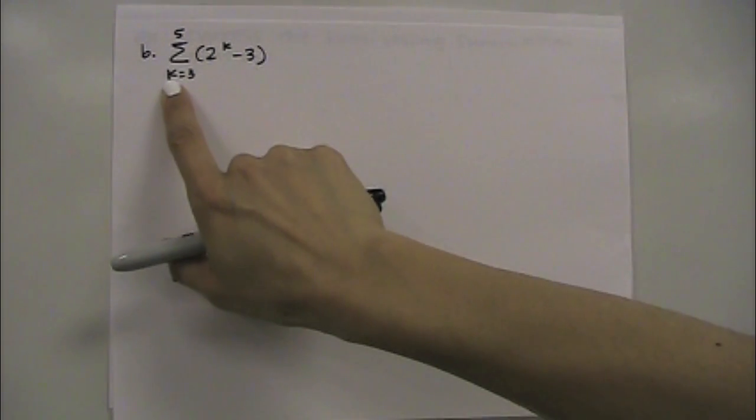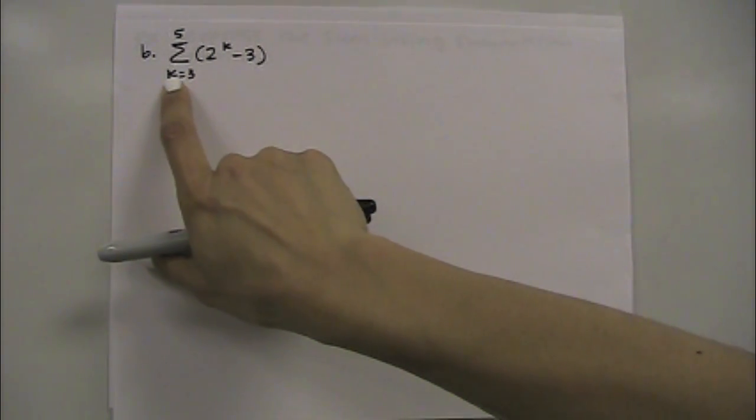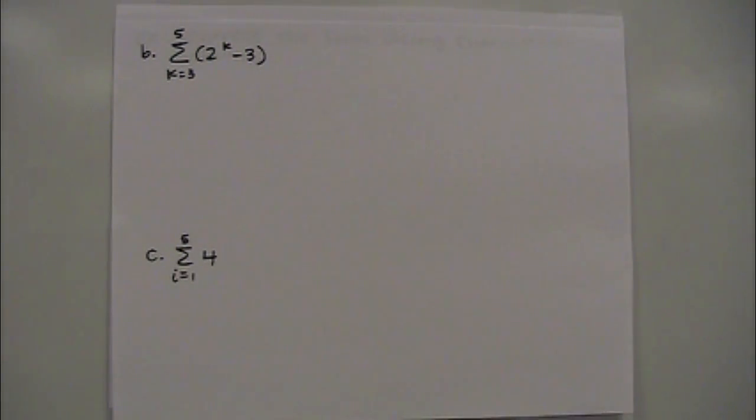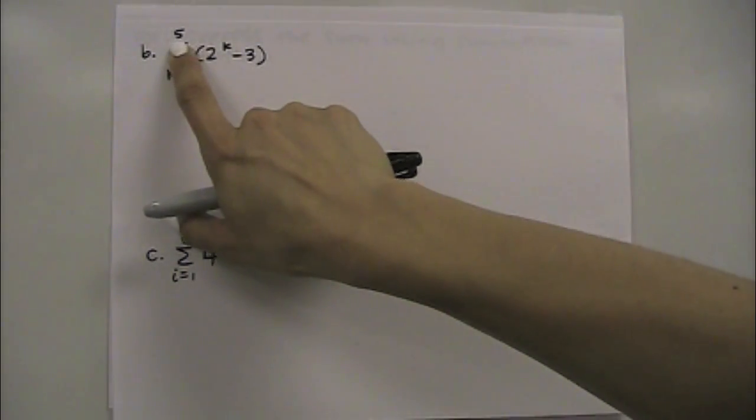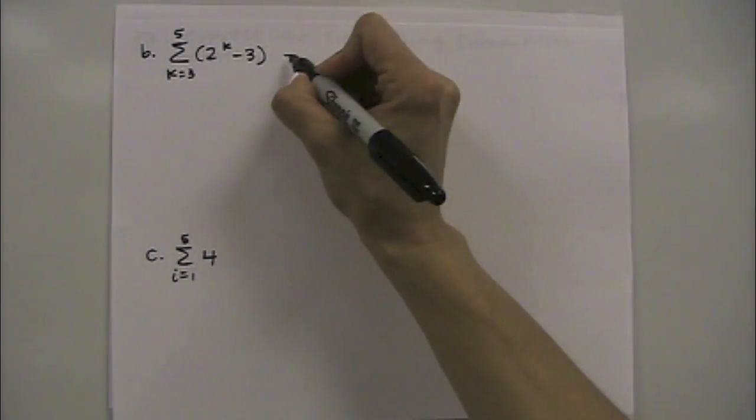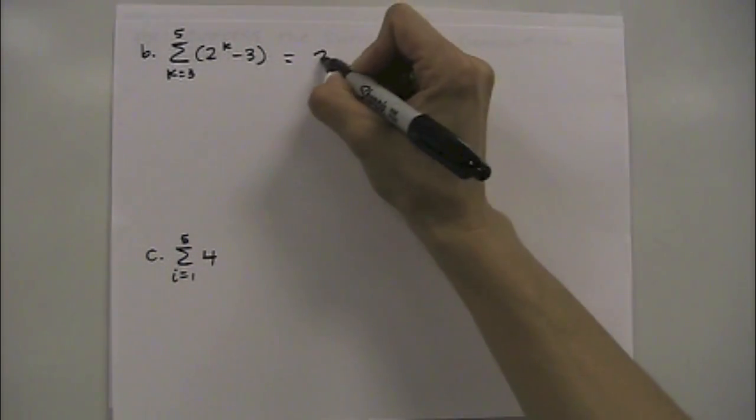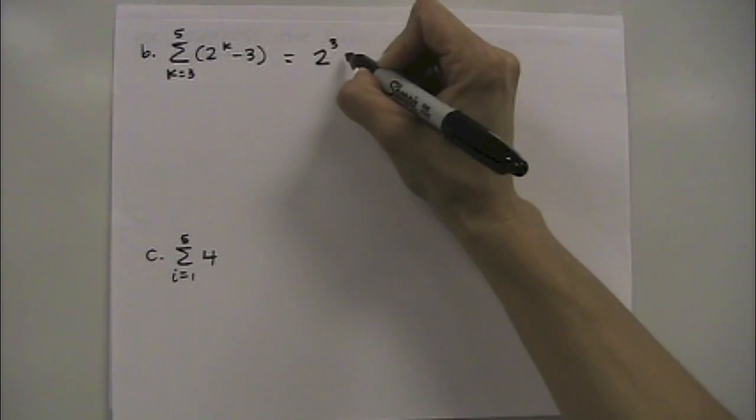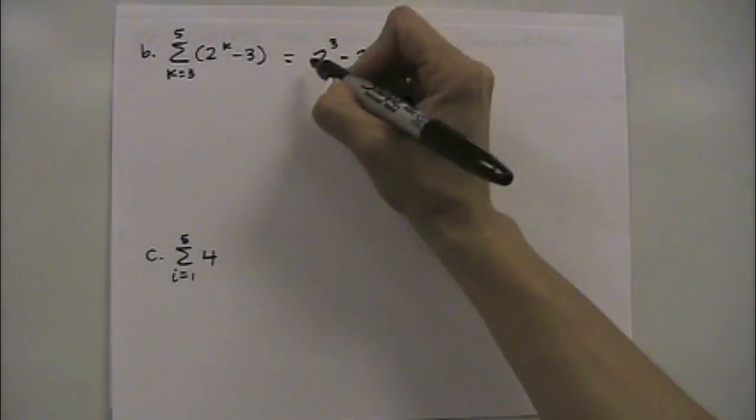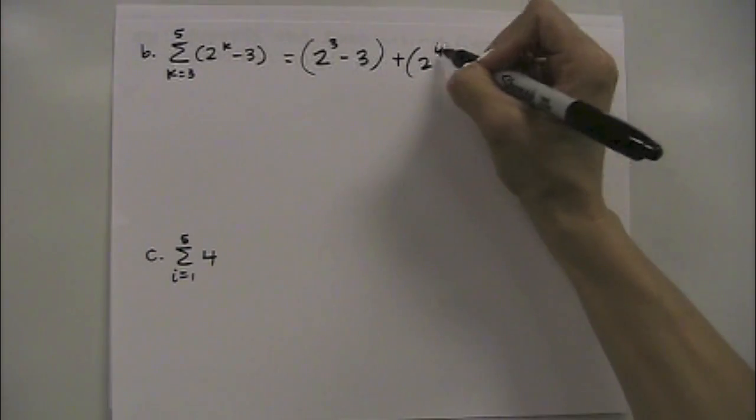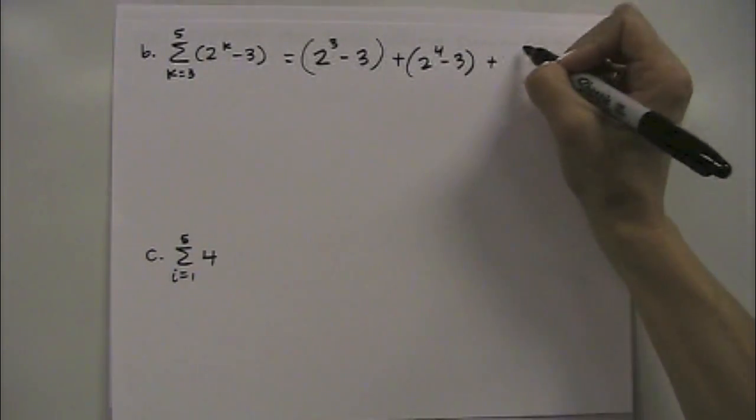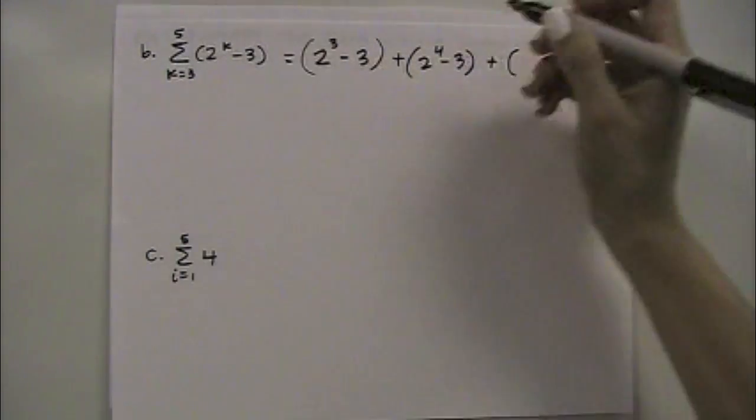In this one, part b, we have k now is going to be our letter we're using for our index of summation. K, it starts off with a lower limit of 3 and an upper limit of 5, and then again here's your expression you're plugging into. So we'll start by plugging in 3 for k, then you're going to plug in 4, then we're going to stop by plugging in 5.